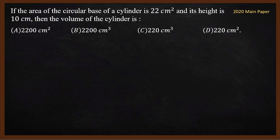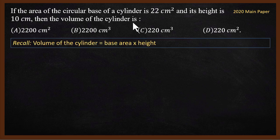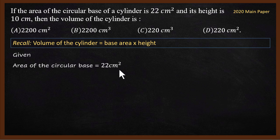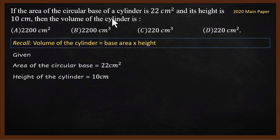Next question is surface area and volume question. What is the question? If the area of the circular base of the cylinder is 22 cm², again 2020 main paper, and its height is 10 cm, then what is the volume of the cylinder? Volume of a cylinder formula is base area multiplied by height.